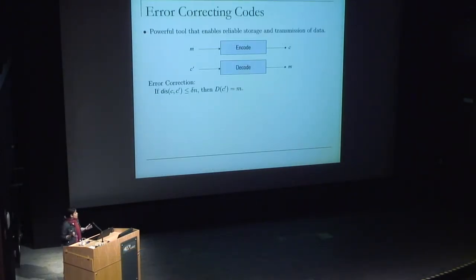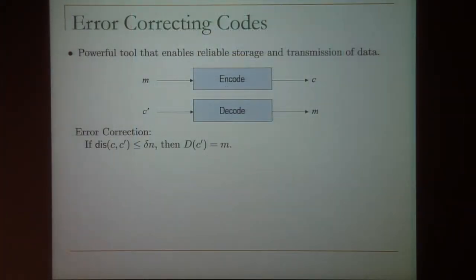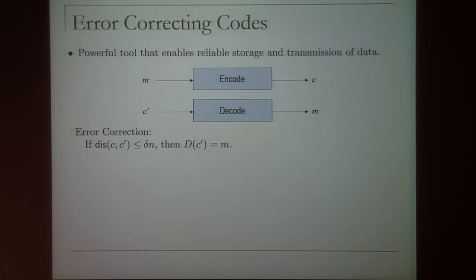We all know what error correcting codes are. Just to make sure we have the notation clear, error correcting codes basically have an encode and decode procedure. The encode procedure takes the message and outputs the codeword. The decode procedure will take a potentially corrupted codeword, and the guarantee is that as long as not too many corruptions take place, the decoder will decode the original message — in particular, as long as the distance between C and C prime is at most delta n, so at most a constant fraction of errors, the decoder will decode to the original message.